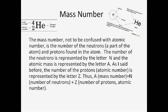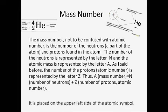As I said before, the number of the protons is represented by the letter Z. Thus, A, the mass number, equals N, the number of neutrons, plus Z, the number of protons, atomic number. It is placed on the upper left side of the atomic symbol.